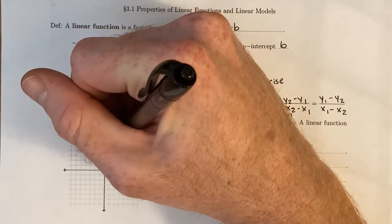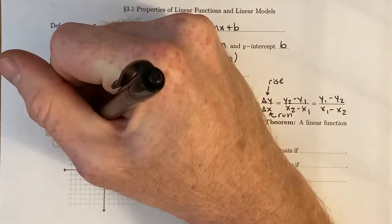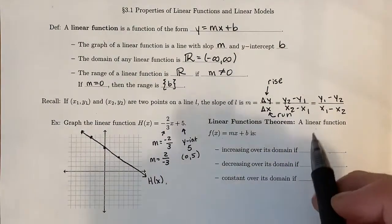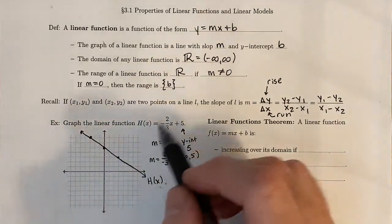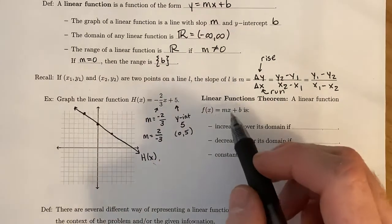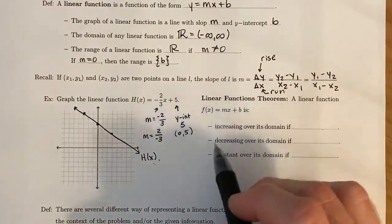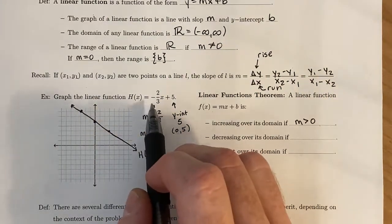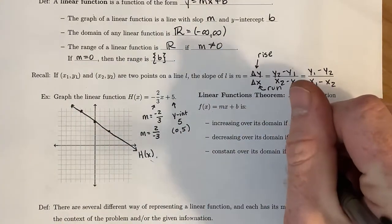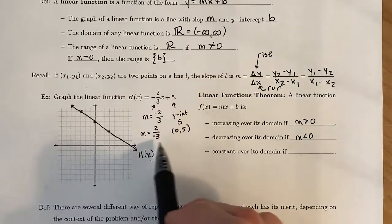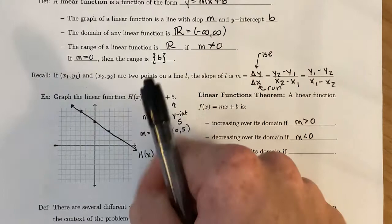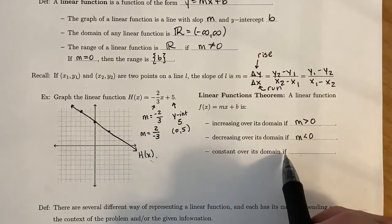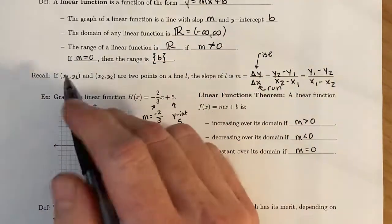And since we have a couple points, we can just connect those. And we end up with our function here, our graph. Now there's a way to tell if your function is decreasing, or if it's increasing, or if it's just staying constant. And that's all dictated by the slope m. So our linear function is increasing over its entire domain if m is a positive number. And as we saw in this previous example, it's going to be decreasing when m is less than 0. And our linear function is constant over its domain if m is equal to 0. Then we get a constant function y equals b.